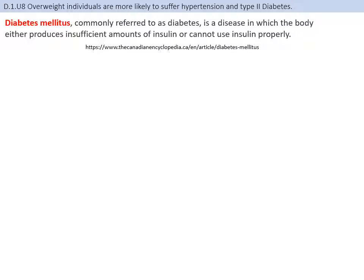Another issue from over-nutrition alongside hypertension is diabetes mellitus. In both type 1 and type 2, the issue relates to insulin — either it doesn't exist, isn't made in the proper form, or isn't produced at sufficient concentration. As a result, the body cannot regulate blood glucose levels, because insulin's job is to increase the absorption of glucose from the blood into cells.